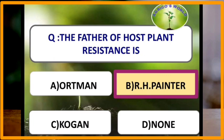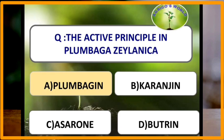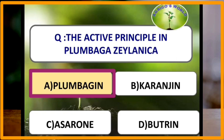The active principle in Plumbago zeylanica is plumbagin. Plumbagin is the active principle present in Plumbago zeylanica.